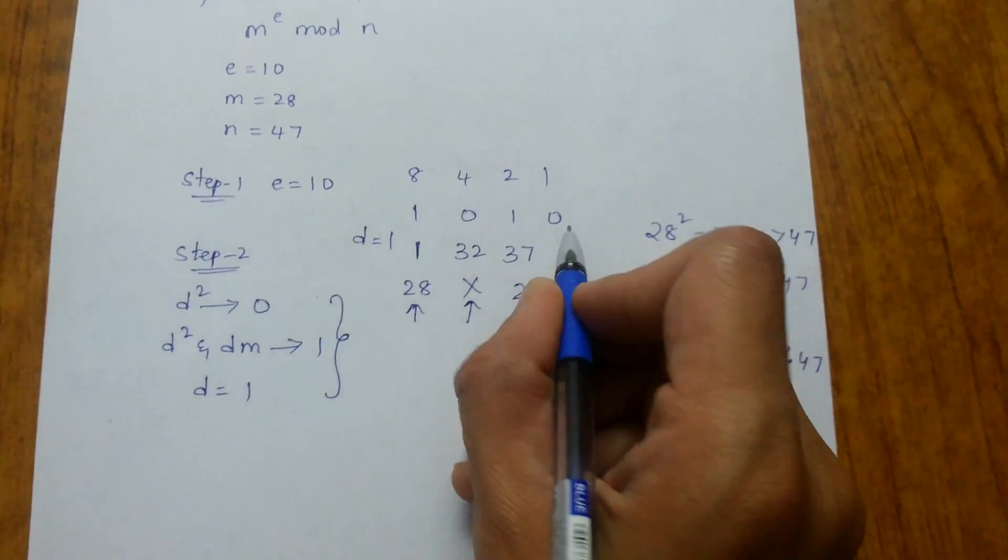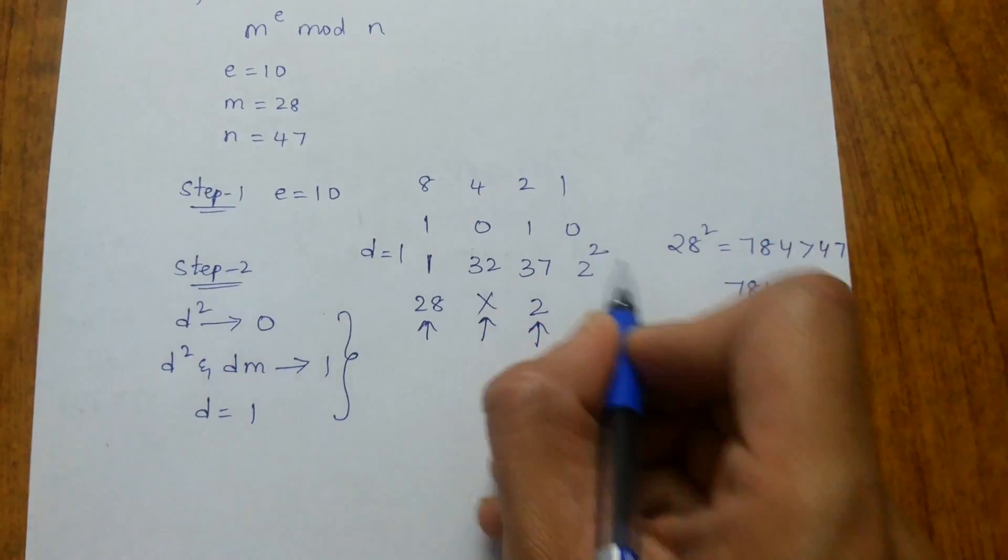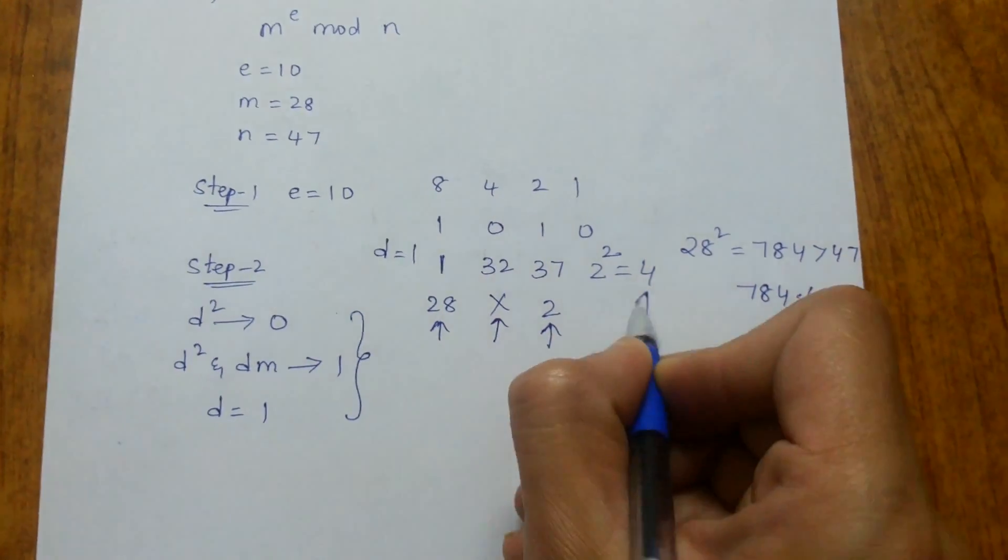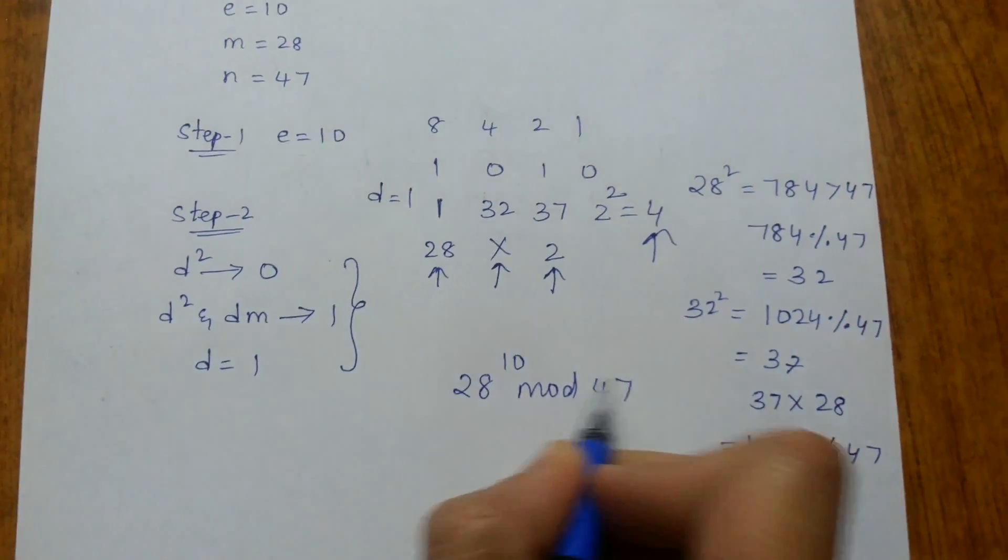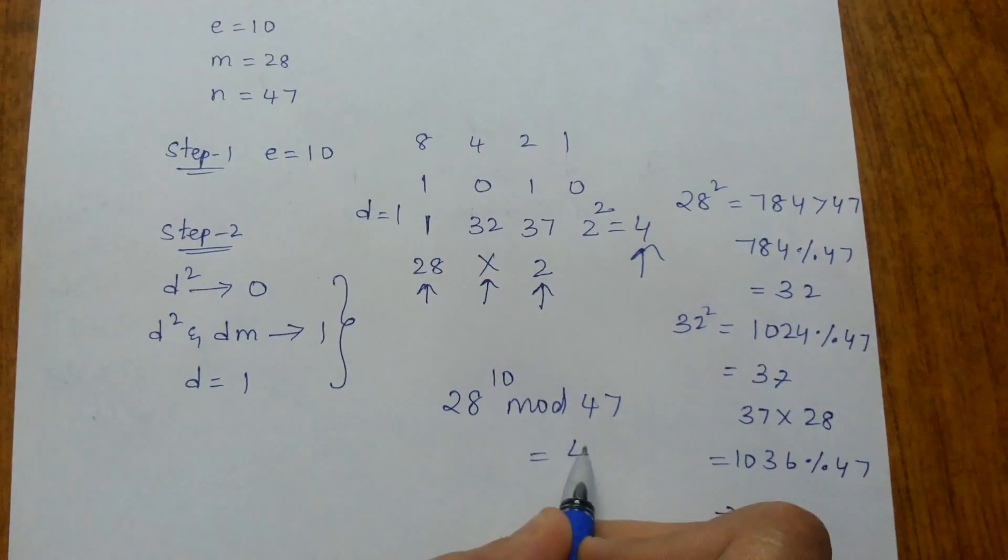Since we have encountered 0, we do d², that is 2² = 4. This is the answer: 28^10 mod 47 = 4.